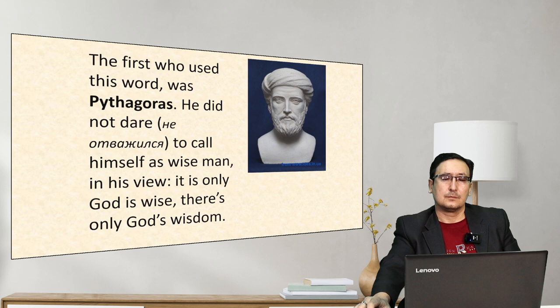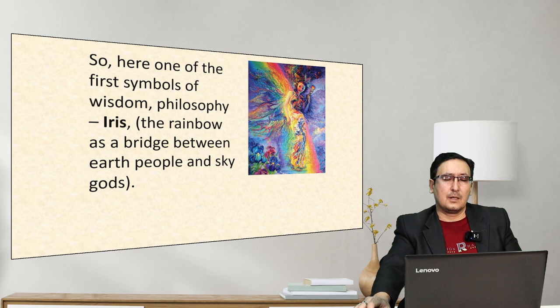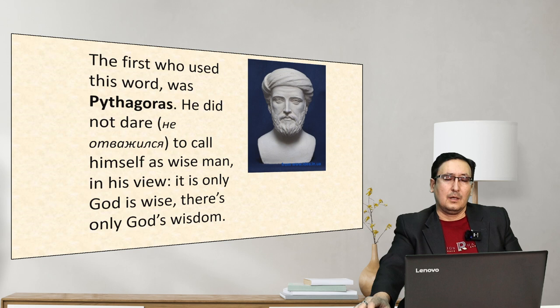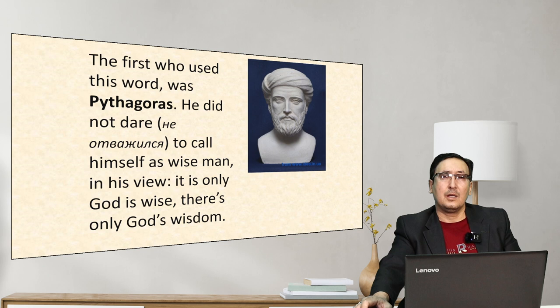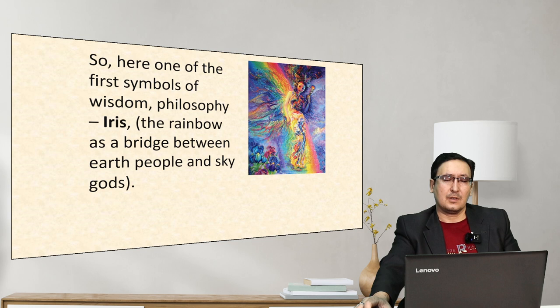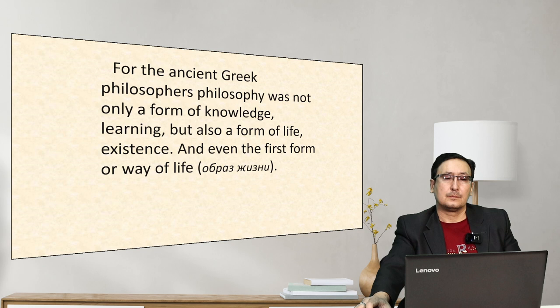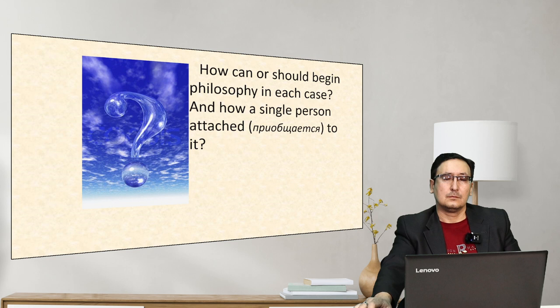The first to use this word was Pythagoras. He didn't dare to call himself a wise man — in his view, only God is wise. Here, one of the first symbols of wisdom is Iris, the rainbow, a bridge between earth people and sky gods. For the ancient Greek philosophers, philosophy was not only a form of knowledge but also a form of life and existence.